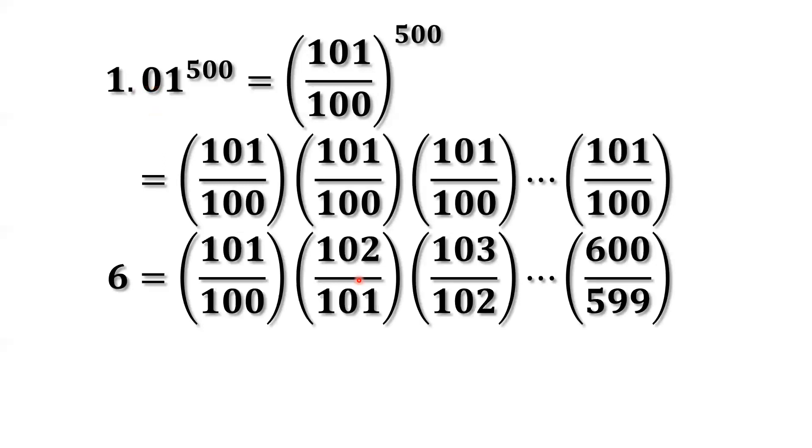Now we can rewrite 6 similar to this. This is a typical trick in mathematics for solving problems. Look at this. Let's mark it. You will see, this is 6 right hand side. So here, 101 over 100 times 102 over 101 times 103 over 102... 101 cancel, 102 cancel, 103 cancel, this cancel, 599. So what's the remaining part? Numerator, we have 600, denominator has 100. 600 divided by 100, that's 6. Right?